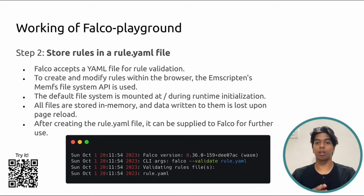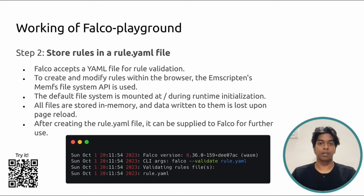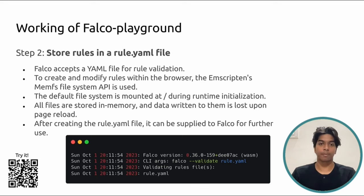The next essential step is to store all Falco rules within a single YAML file, typically named rule.yaml, which is supplied to Falco for further validation. However, when using a web browser, things can get tricky because the browser restricts direct file writing, updating, or storage. To combat this, Emscripten offers a file system API that allows us to temporarily store files in memory. These in-memory files are then seamlessly provided to Falco for validation and processing — we use memfs, or memory filesystem, that comes packaged with Emscripten.